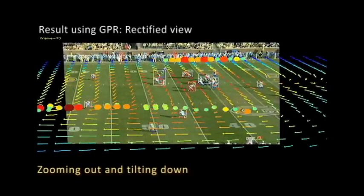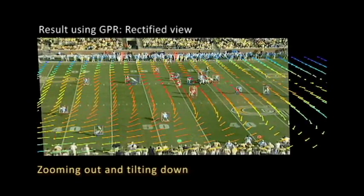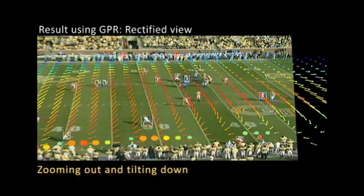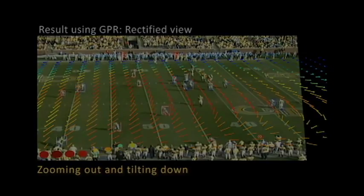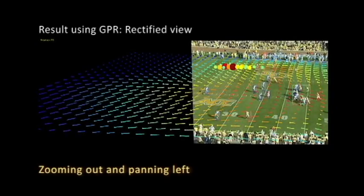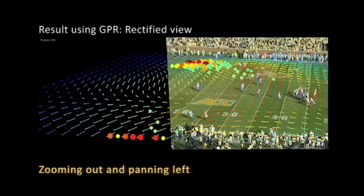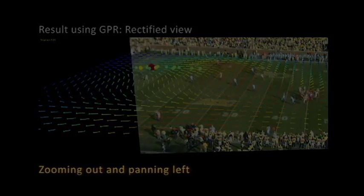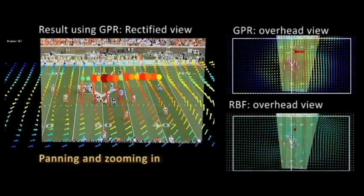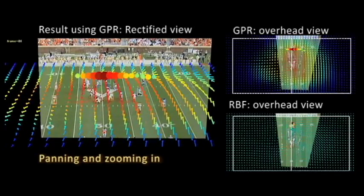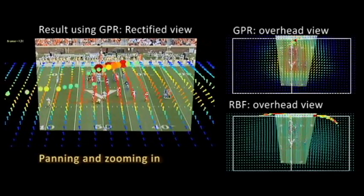In this video, the interest points appear on the top and bottom of the screen. We can see that the camera zooms out and then tilts down. Another example for panning left. In this video, the region of interest is focused on the distant part of the field, which anticipates the camera operator zooming in.